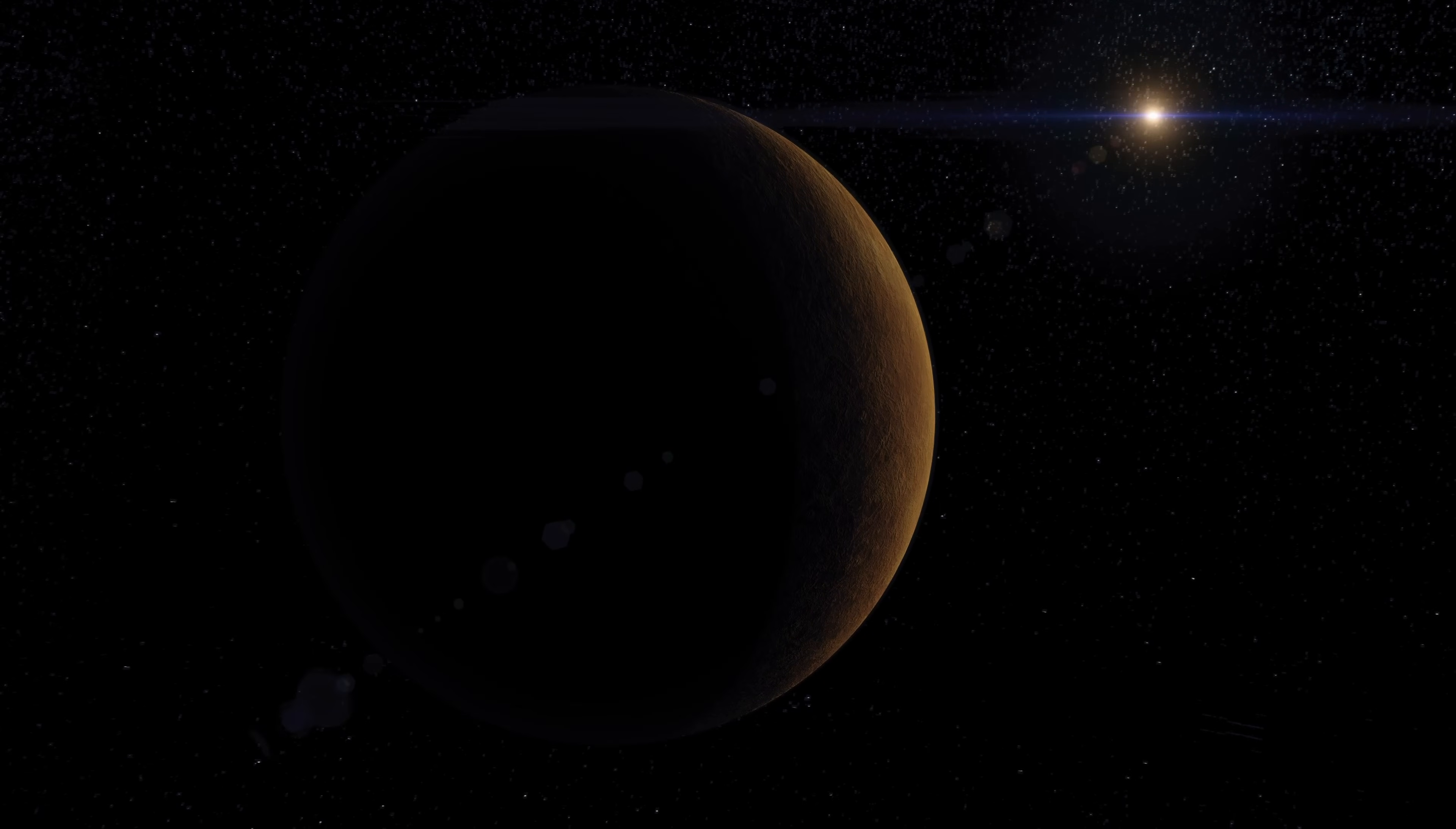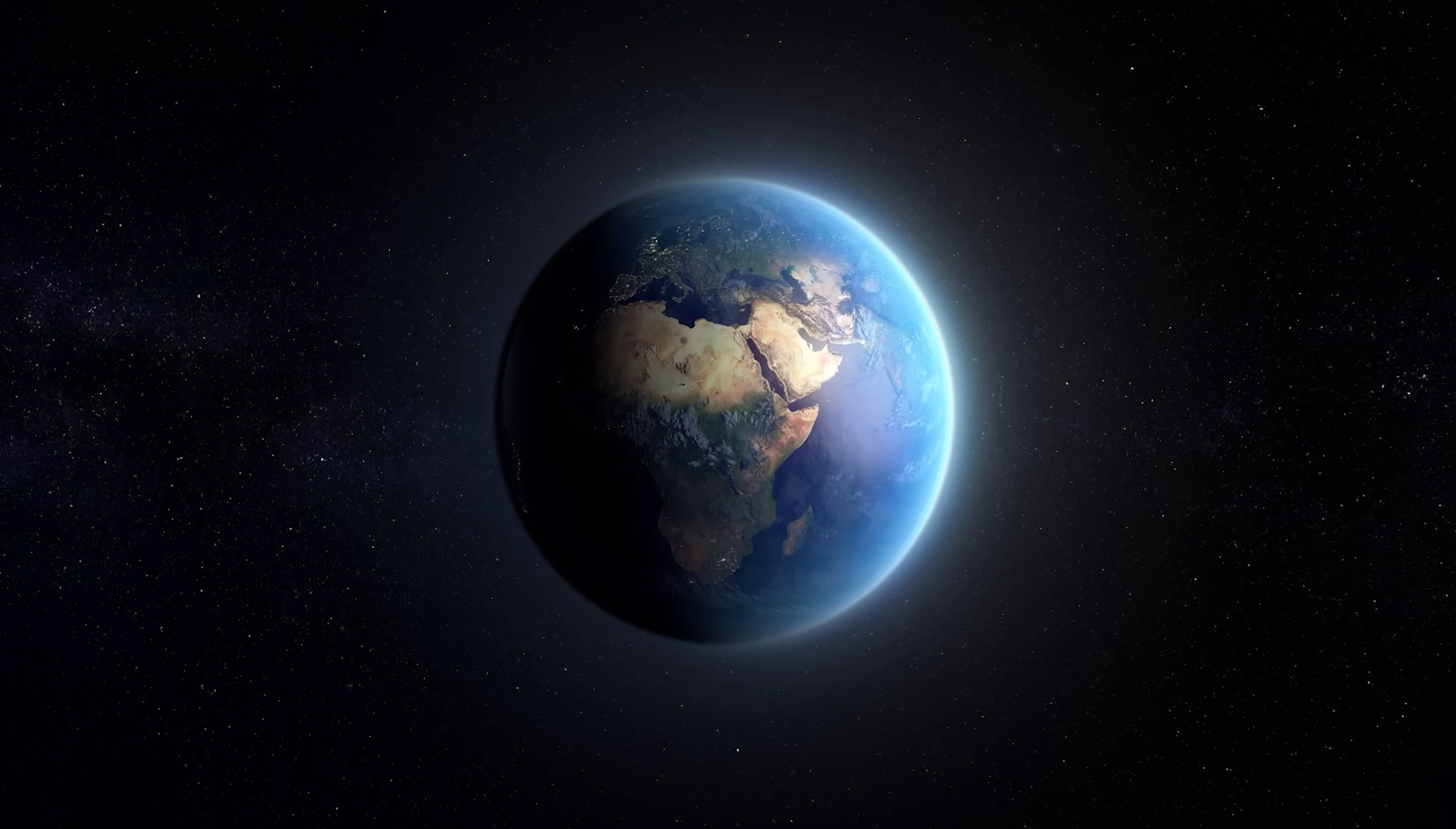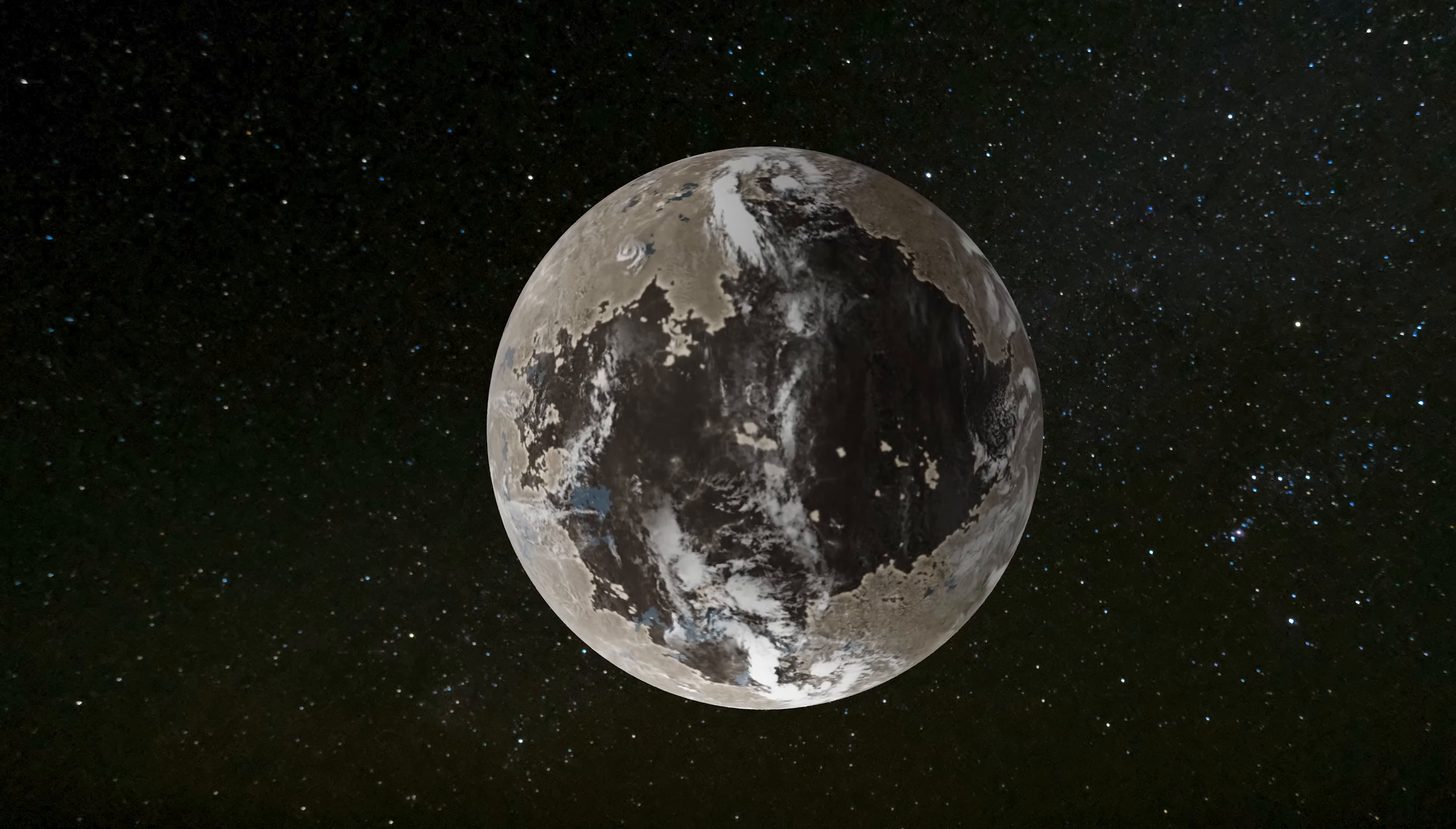However, being located in the habitable zone alone does not make a planet truly habitable. Another critical factor is a planet's atmospheric composition. Earth's atmosphere, especially its greenhouse gases and ozone layer, plays a vital role in sustaining life by shielding us from harmful levels of solar radiation. Proxima B might offer similar protection, but the situation is far from certain.